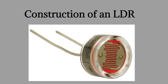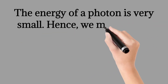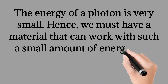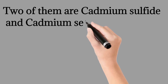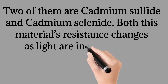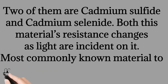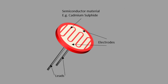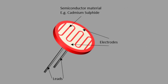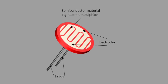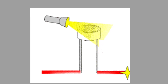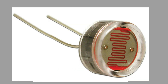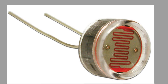Construction of an LDR. The energy of a photon is very small, so we must have a material that can work with such a small amount of energy. Two such materials are cadmium sulfide and cadmium selenide. The most commonly used material to make an LDR is cadmium sulfide. Highly purified cadmium sulfide in powder form is mixed with a binding agent, then compressed and heated. The mixture becomes a lump, which is sandwiched between two electrodes in a serpentine or zigzag shape. This disc is then either encapsulated in transparent resin or encased in glass to protect it from atmospheric contamination.